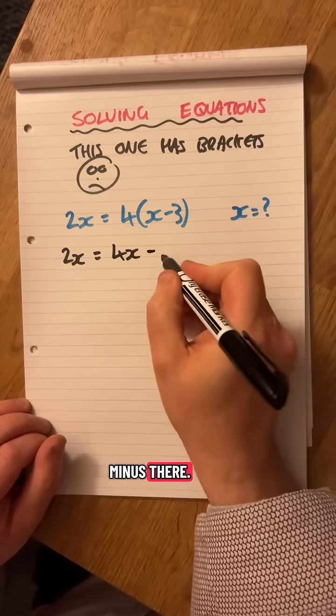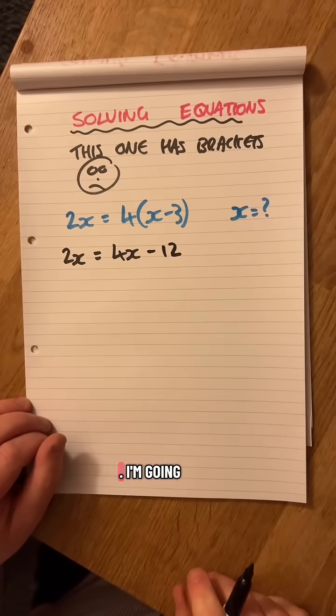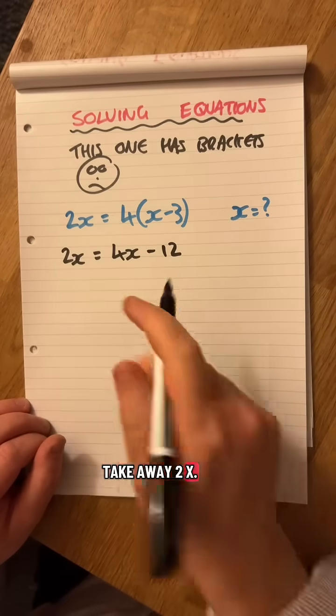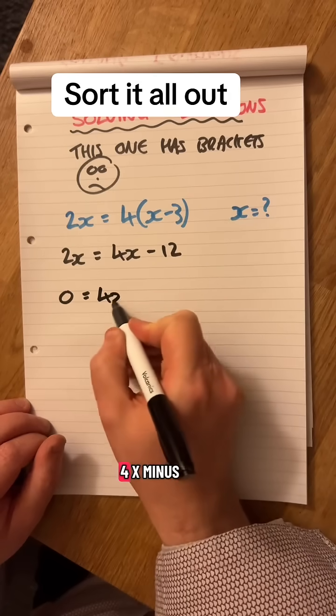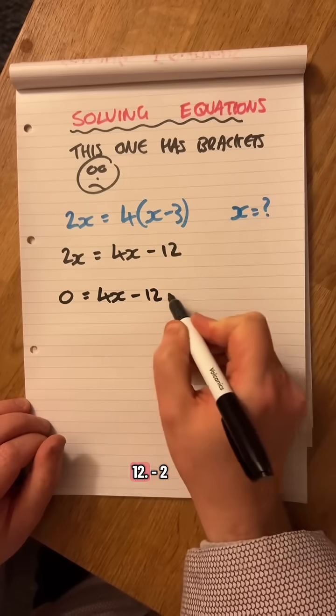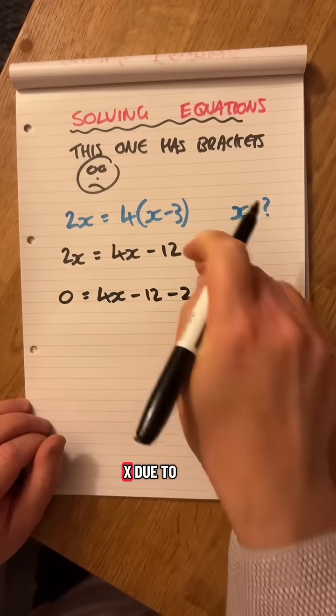I'm going to get the x's together now, so I'm going to take away 2x. That gives me naught. Don't tell me off for doing that. 4x minus 12 minus 2x, do to one side, do to the other.